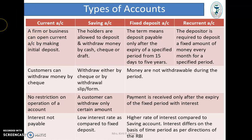A firm or business can open a Current Account by making an initial deposit. In a Saving Account, holders are allowed to deposit and withdraw money by cash, check, or draft. In a Fixed Deposit Account, the deposit is payable only after the expiry of a specified period from 15 days to 5 years, with the rate of interest varying depending upon the time period. In a Recurrent Account, the depositor is required to deposit a fixed amount of money every month for a specified period, receiving a cumulative sum with interest after expiry of that period.